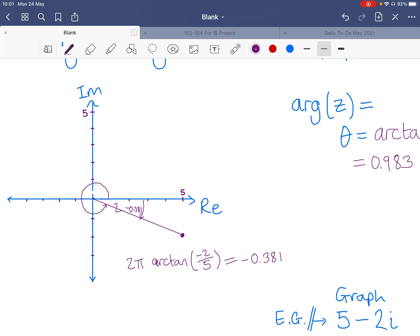But I am going to add 2π to this. Add 2π. I'm going to get 5.90. So that is the argument of this complex number.